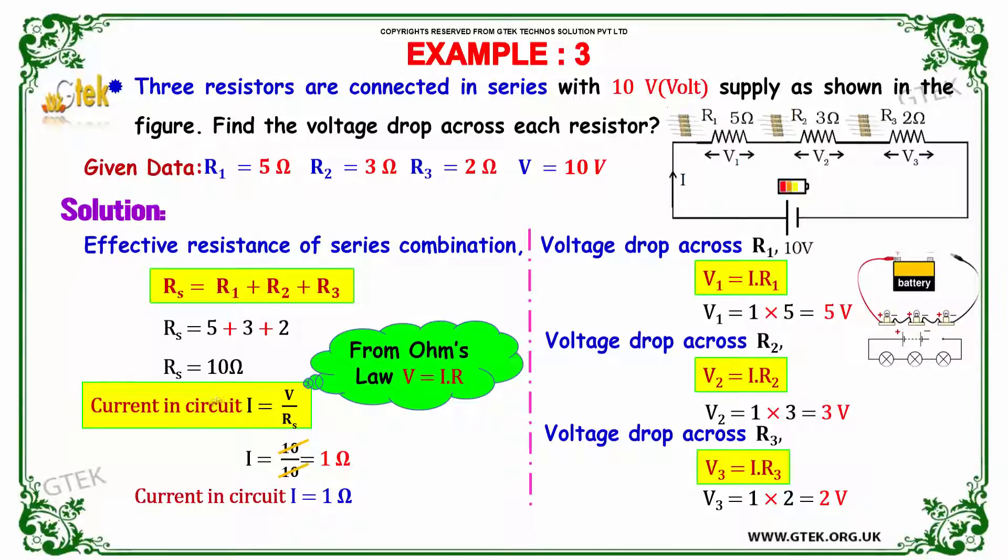So since current in the circuit can be identified from V divided by R_s, so V is 10 volt divided by 10 ohm, you got 1 ampere. So current in the circuit is given by, it's not ohm, it's ampere. We got ampere. I is equal to 1 ampere, it's not ohm.